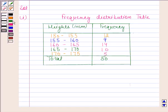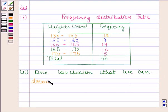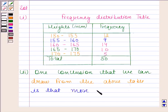So, our required answer of the second part is one conclusion that we can draw from the above table is that more than 50 percent of students are shorter than 165 centimeters.